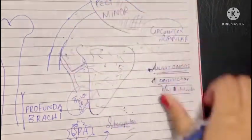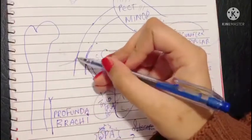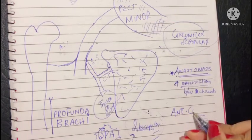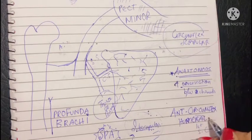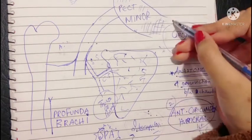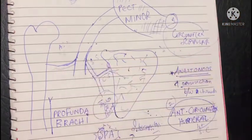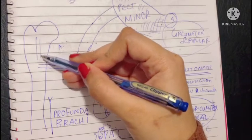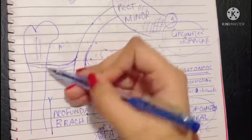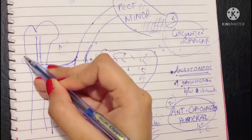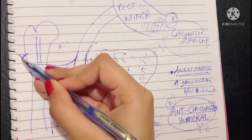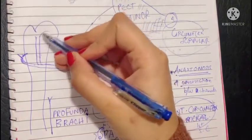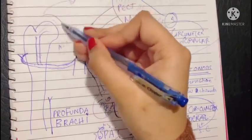Now let's move on and talk about another anastomosis taking place around the humerus bone. The second branch of the third part of the axillary artery is the anterior circumflex humeral. As the name says, it goes laterally and reaches in front of the humerus, passing in front of the intertubercular sulcus of the humerus. In front, it gives off an ascending branch, goes around the humerus, and anastomoses with the other branch of the third part. The ascending branch gives blood supply to the head of the humerus and the shoulder joint.